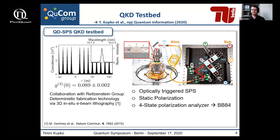For our tests, we used fixed polarizations as input for our polarization analyzer or receiver module BOP, where we have a passive basis choice realized with a 50/50 beam splitter and polarizing beam splitter for polarization state discrimination. The outputs of our module are connected by 50-micron multimode fibers to silicon avalanche photodiode detectors.